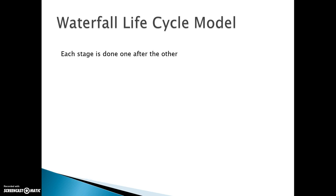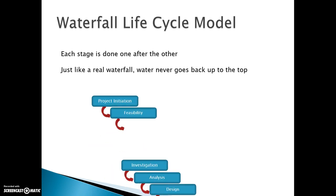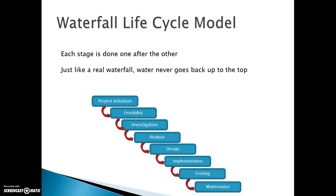So in the waterfall cycle, as you know, each stage is done one after the other. You do not move on to the next stage until you have completed the first one. So just like in a real waterfall, water never goes back to the top. So once you've completed, as you can see, it's one after the other: project initiation, feasibility. Each stage is done one after and the arrows are pointing downward. You don't go back up. I've never seen a waterfall that goes back upwards. So let's just say you get to analysis stage. You cannot go back to investigation, feasibility or project initiation. You can only move forward.